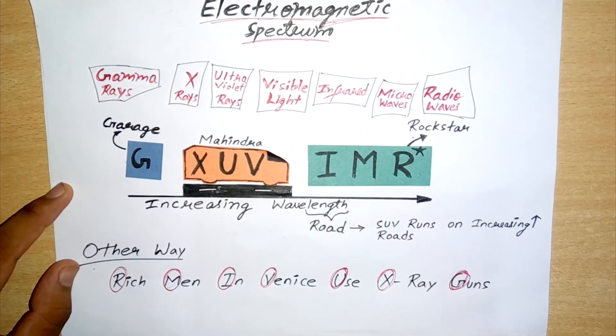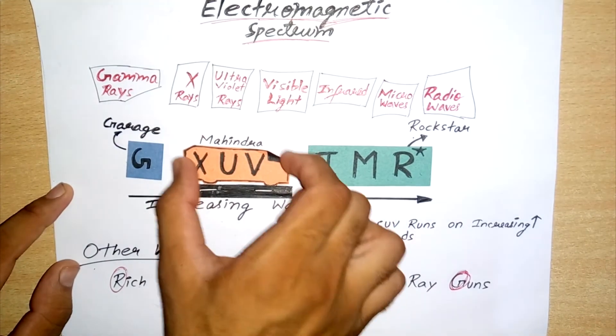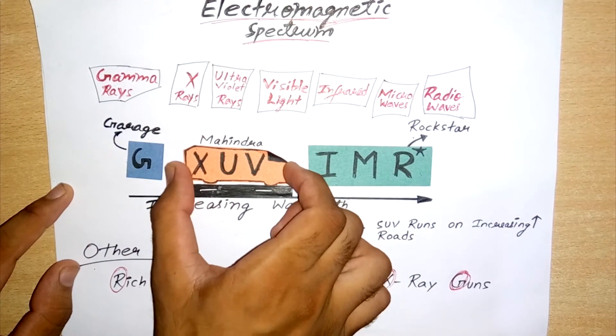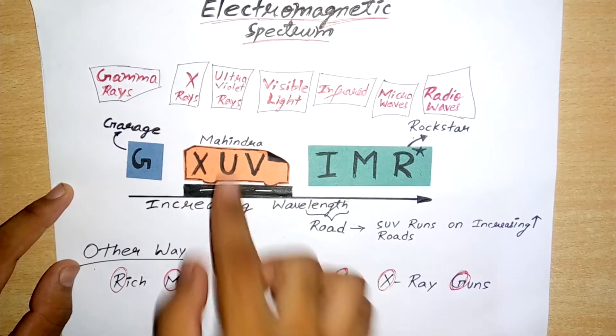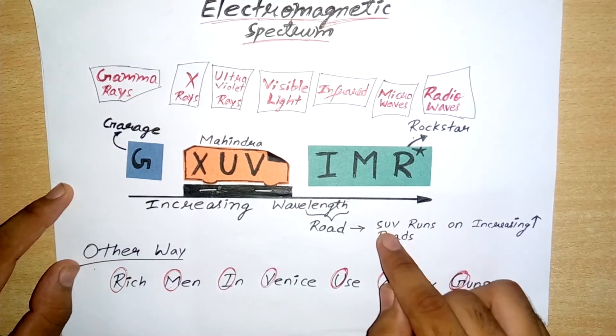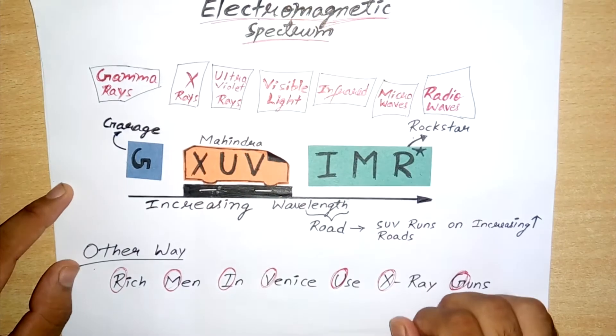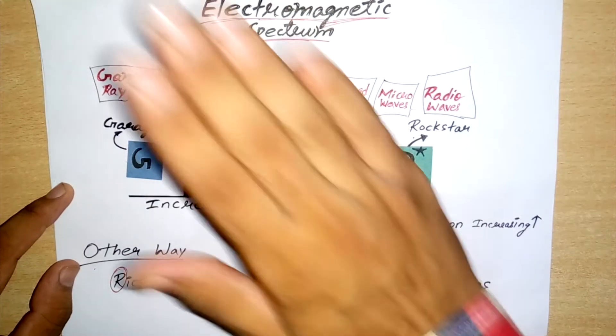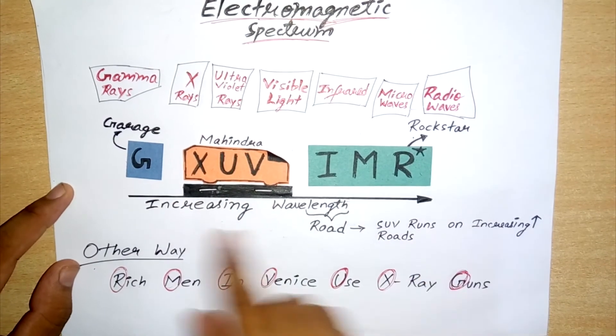Microwaves and radio waves. And there is a car in India which is Mahindra XUV, which is an SUV, and these vehicles can run on increasing roads. They can run on real stations easy.